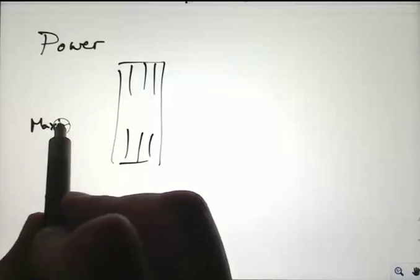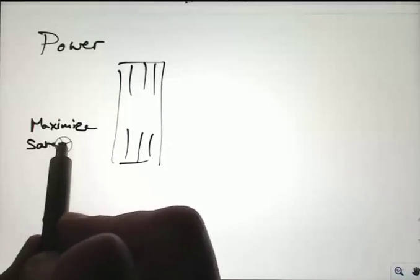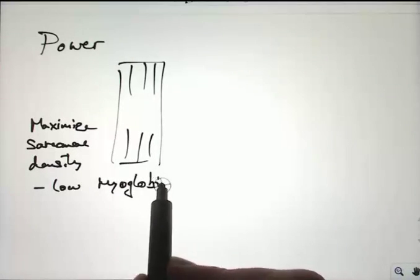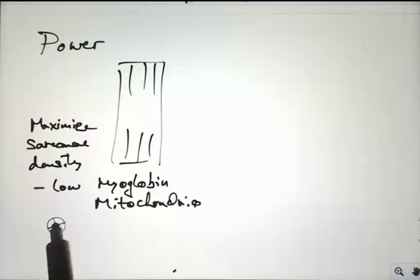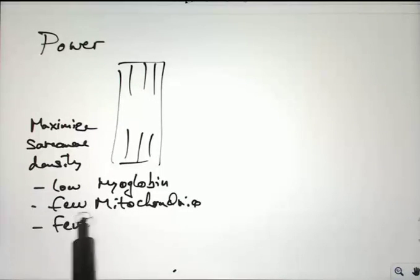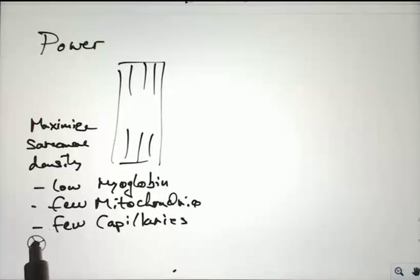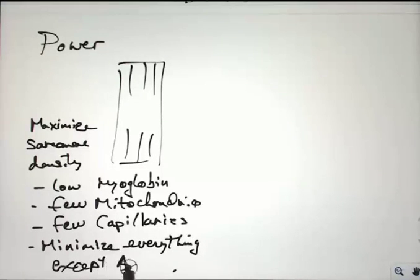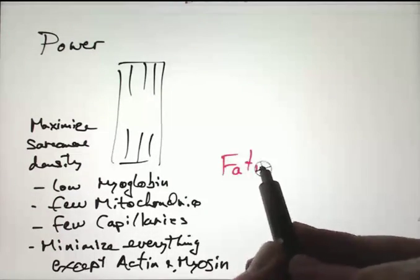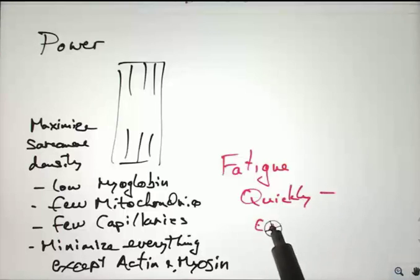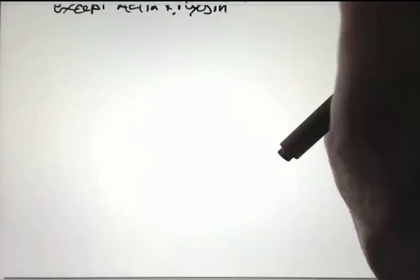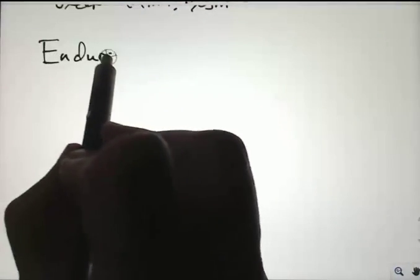What about for power? So for power, you want to maximize the amount of the sarcomeres, myosin and actin. So maximum sarcomere density, low myoglobin, so low storage of oxygen, low mitochondria. Few capillaries because you don't want to waste space for the capillaries. Minimize everything except actin and myosin. That'll maximize power, but these cells are going to fatigue very quickly. They'll run out of energy. They can't replenish oxygen. They can't replenish glucose. They can't replenish ATP. They don't have mitochondria.